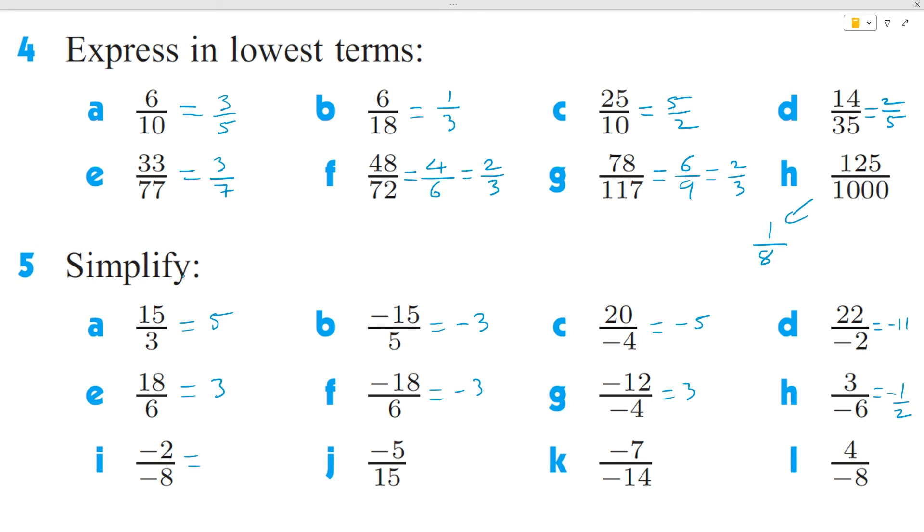Question i, a negative divided by a negative is a positive, and 2 over 8 is going to be a quarter. You can divide top and bottom by 4. Question j, a negative divided by a positive is a negative, and 5 over 15 is the same as 1 over 3.